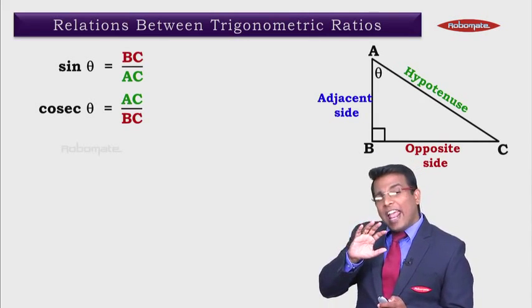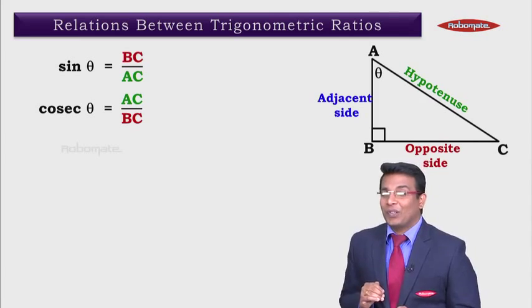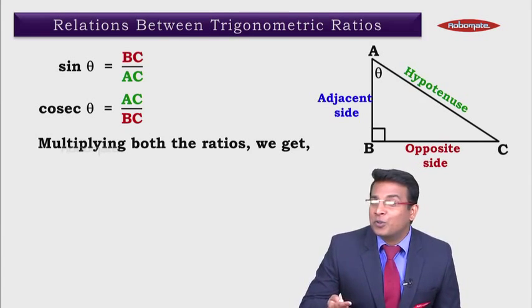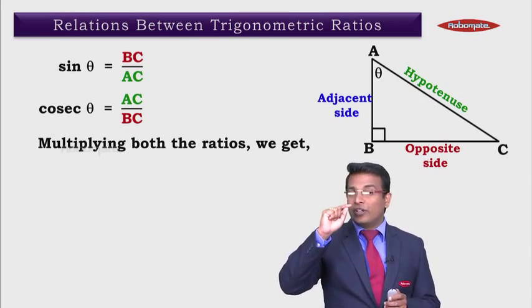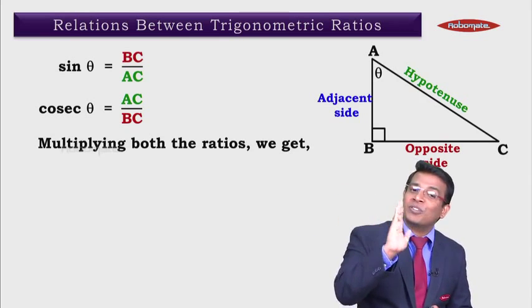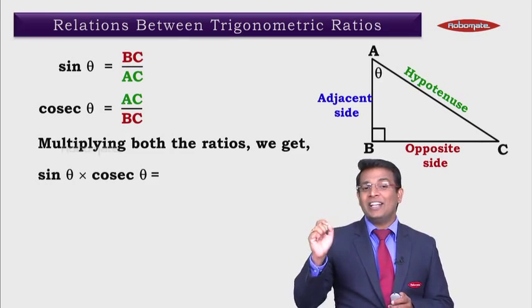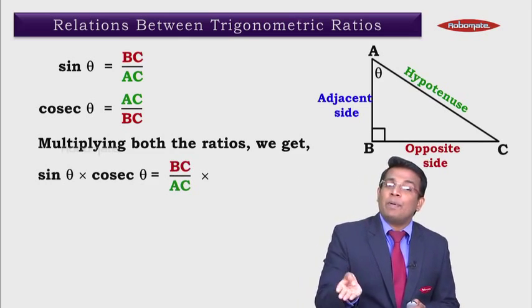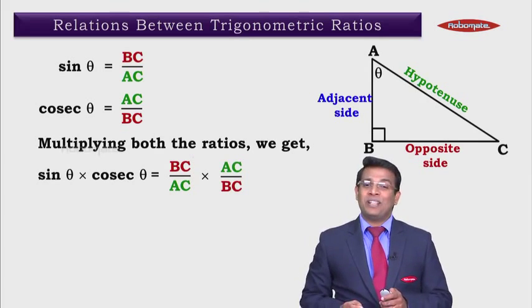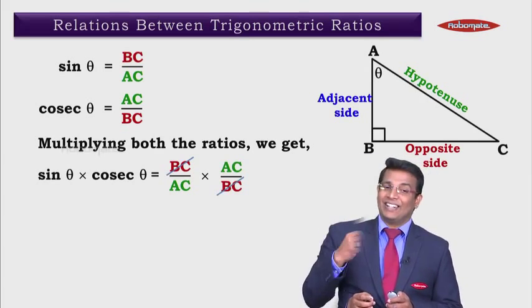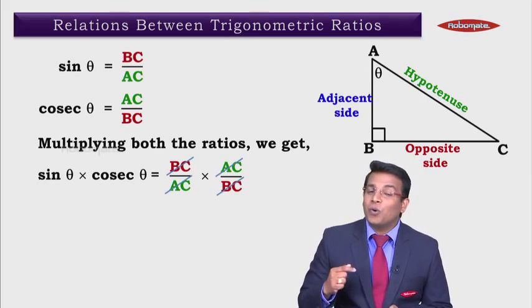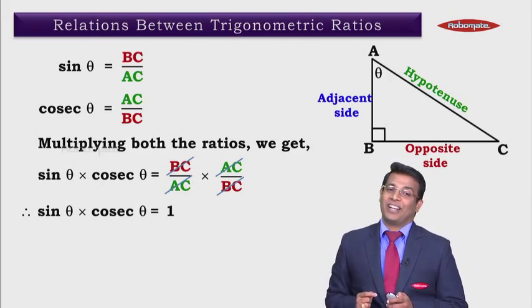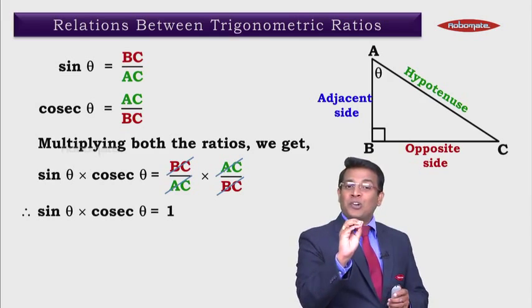Can we get some relation between sine theta and cosec theta? What we are doing here is multiplying both the ratios. When we multiply both statements, we multiply the left-hand side and also the right-hand side. So sine theta into cosec theta equals BC upon AC — the right-hand side of the first statement — multiplied by AC upon BC. BC and BC get cancelled, and AC and AC get cancelled. So we get sine theta into cosec theta is equal to 1.